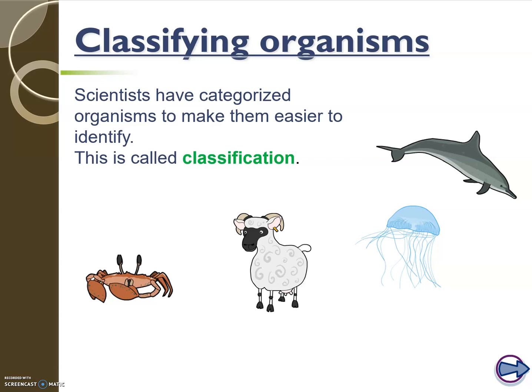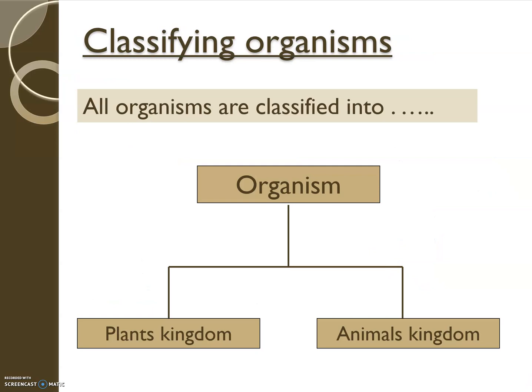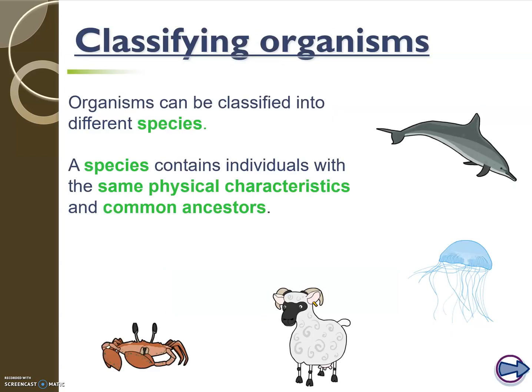All organisms can be classified into two different categories: the plant kingdom and the animal kingdom. Within the plant and animal kingdoms, we can have different species. Each species has individuals with the same physical characteristics and common ancestors.